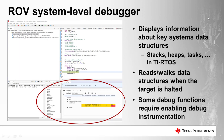ROV stands for Runtime Object Viewer. It displays information about key system data structures such as stacks, heaps, or tasks. It reads and walks data structures when the target is halted, uploads that information into the debugger, and produces informational displays for the developer. Some system-level debugging may require specialized debug libraries or instrumented data structures on the target hardware. ROV works out of the box with TI-RTOS and can also be customized to work with any data structure if you create the appropriate mapping.